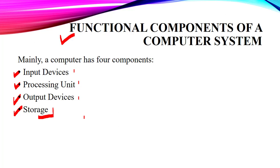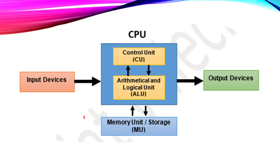At last we have the storage. This storage is responsible for storing all the data. That data can be your temporary data, it can be your permanent data, it can be your results or sometimes it can be your program files. Now here we have this simple flow diagram, where we can see that we have input devices, then the central part is our CPU, and then we have the output devices.